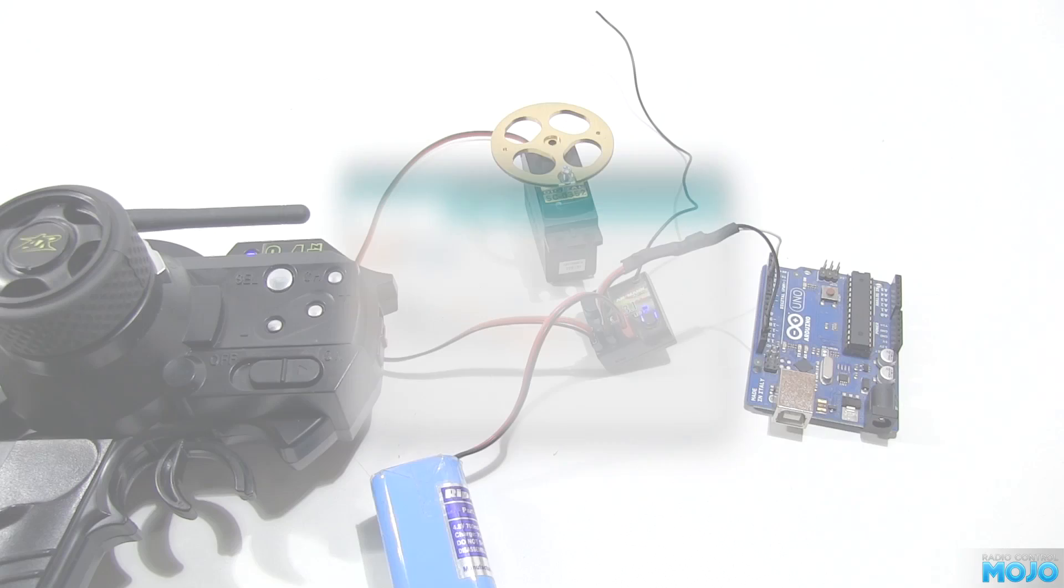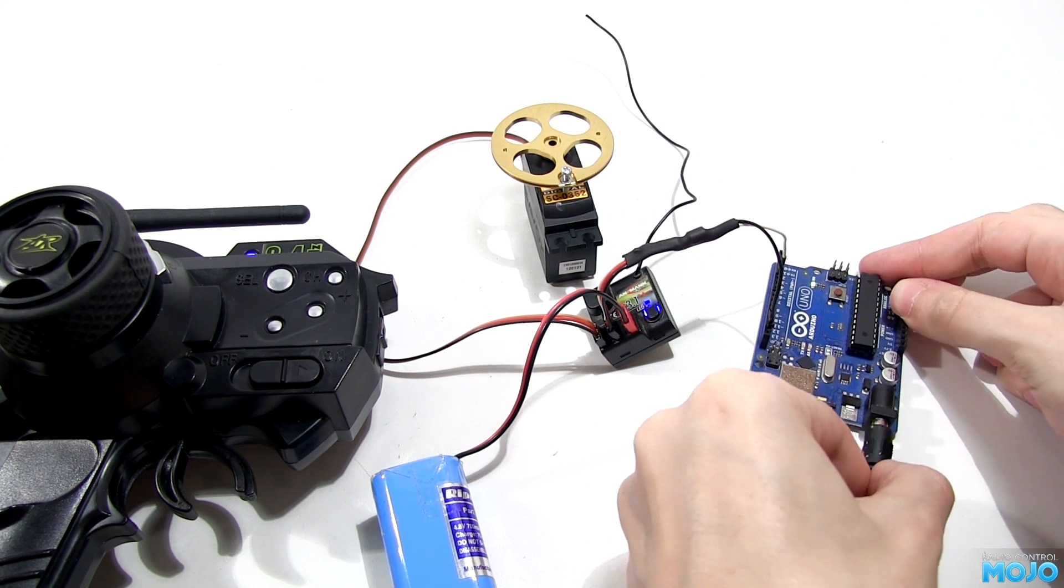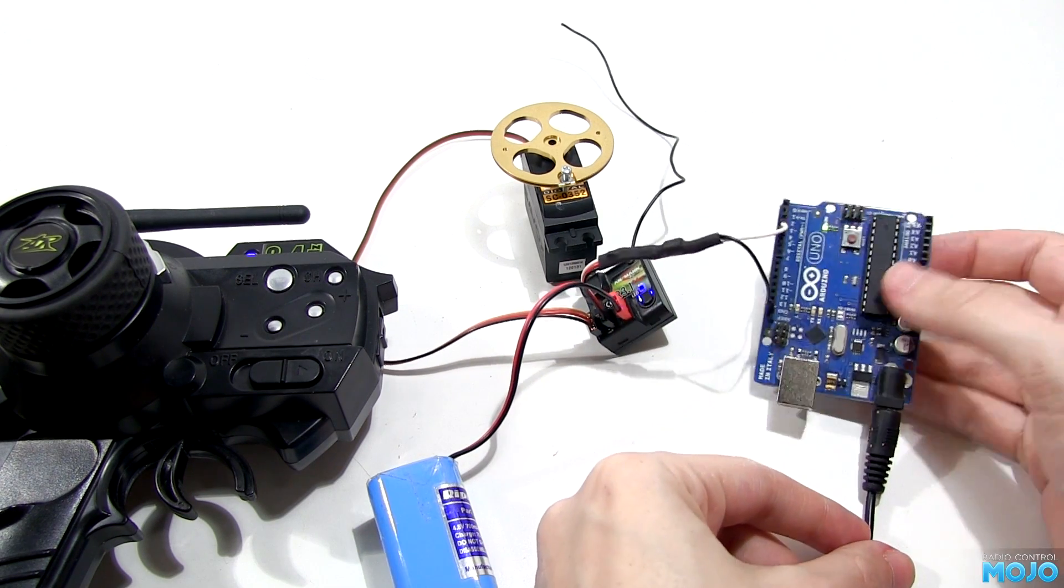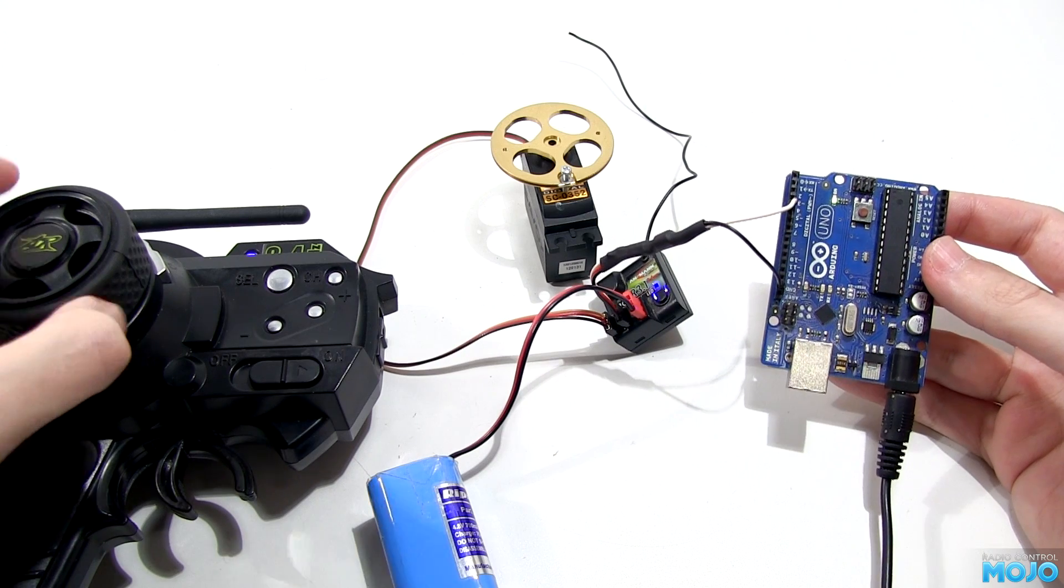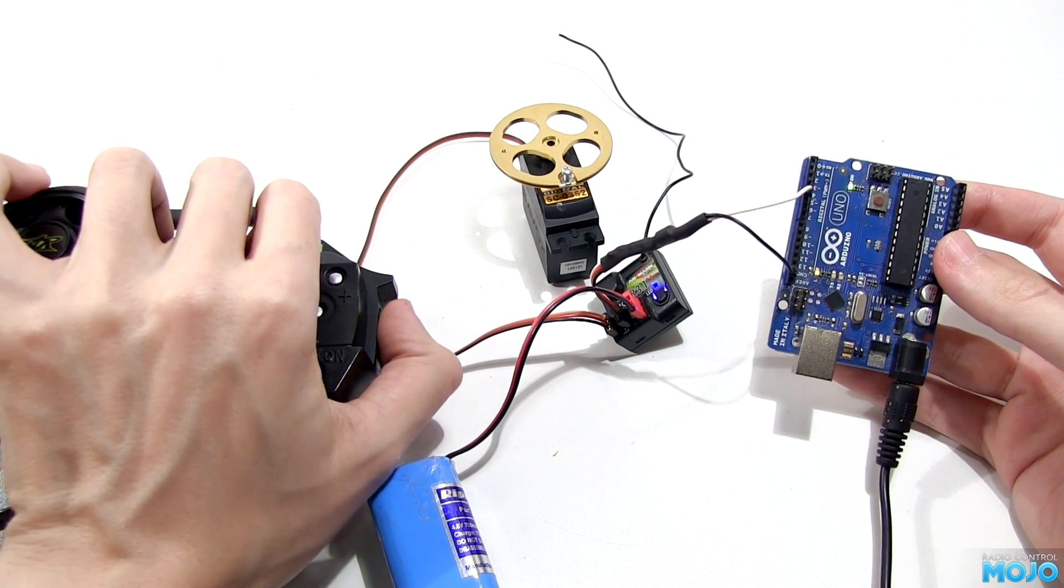All that's left to do is hook it up and give it a test. You'll note there's some heat shrink in the cable with some components under it. That's a very simple buffer to make sure any receiver servo signal will work with the Arduino. It's nothing more than a transistor and two resistors.